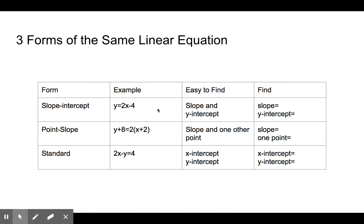But sometimes that's a pretty specific point — that y-intercept. Sometimes we don't know what the y-intercept is. Sometimes we know just one other point, and it's not specifically the y-intercept. Well, if that's the case, then we really want to be using the point-slope form.